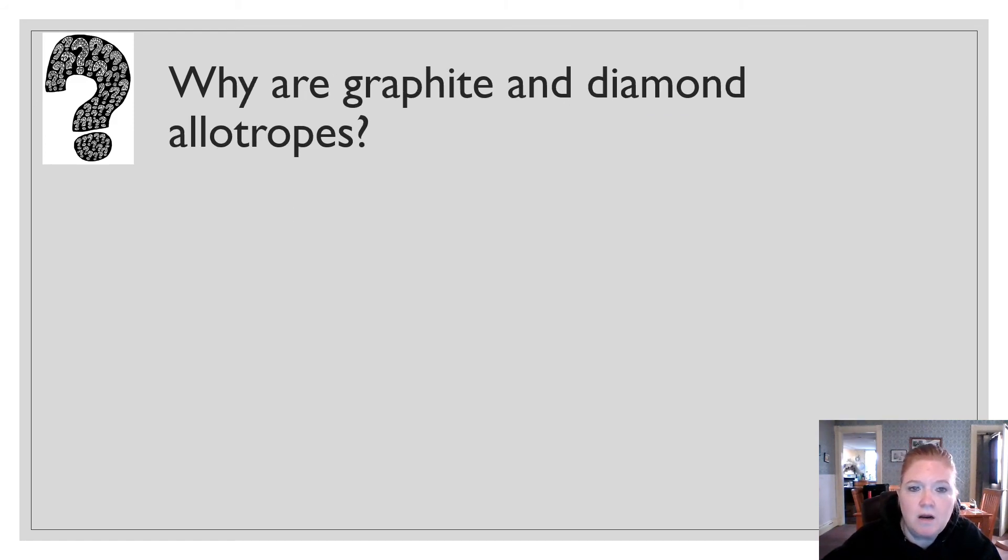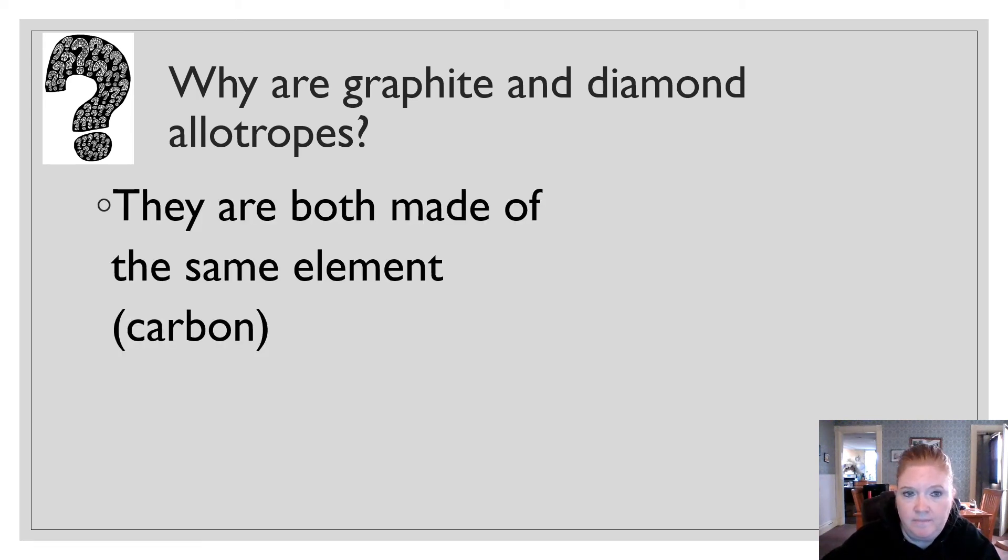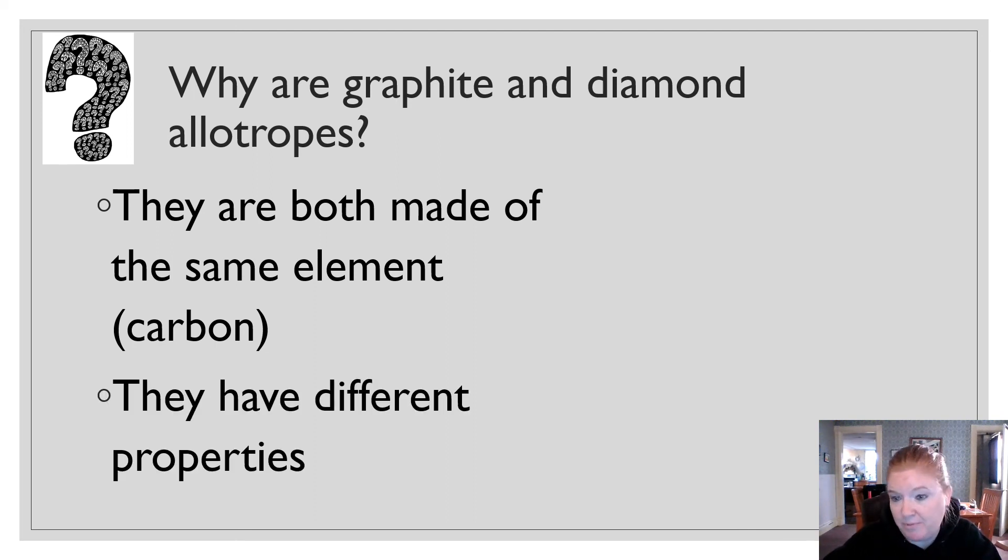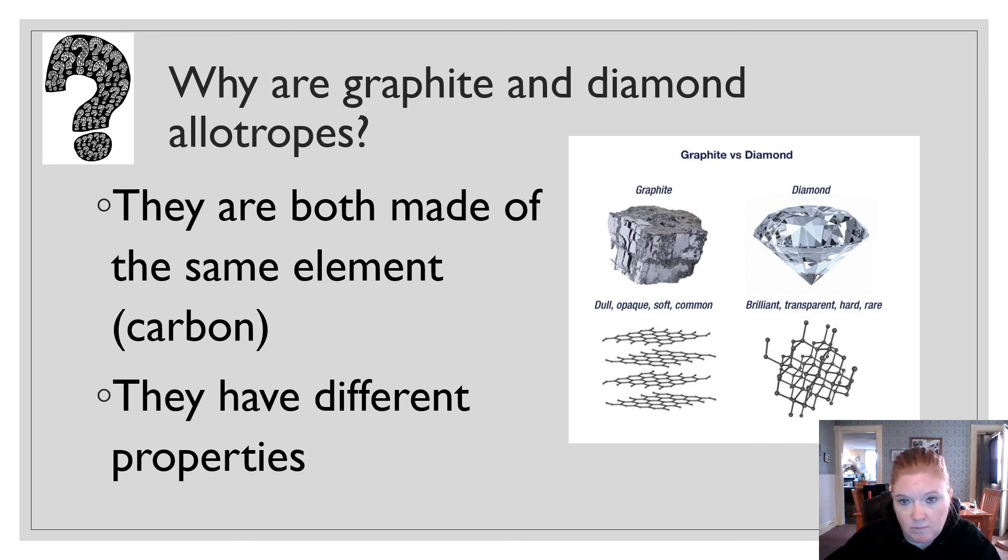Allotropes. Why are graphite and diamond considered allotropes? Well, they're both the same element carbon, but they have different properties, right? So allotropes are the same element, different structures, different properties. Okay. Graphite and diamond, both carbon, same element, different structures, different properties. You can see graphite is kind of arranged in like sheets.